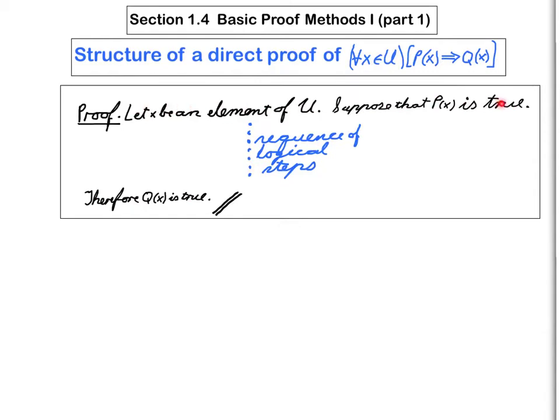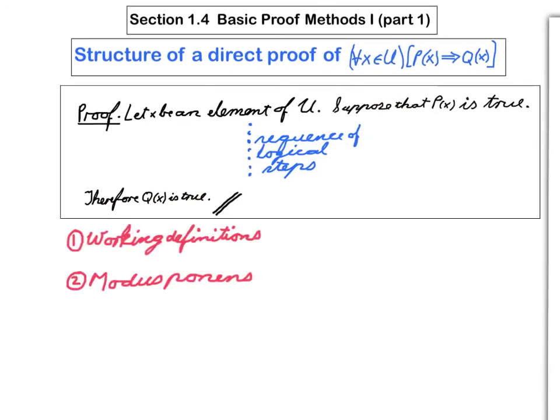So this part, these three sentences are absolutely routine. The moment someone tells you that you're going to write a proof of something like this, and it's to be a direct proof, you should immediately know to do these three sentences.